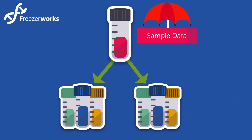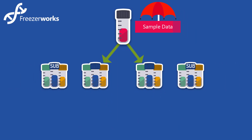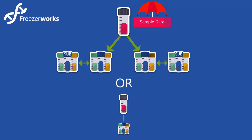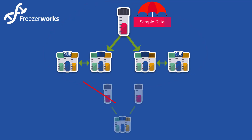If you then create sub-aliquots from those aliquots, like in the case of DNA extraction, they too become children of the sample while maintaining a lineage link to the parent aliquots they're spun from. A sample can exist on its own, it can have a single aliquot in order to track freezer position, or it can have many different aliquots in many different freezers. But an aliquot can only be part of one sample.